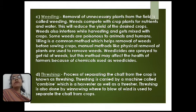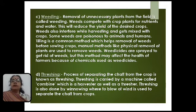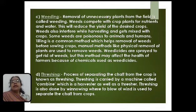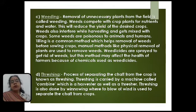Weedicides are sprayed to get rid of weeds, but this method may affect the health of the farmer because chemicals are used as weedicides. Next is threshing. The process of separating the chaff from the crop is known as threshing. Threshing is carried out by a machine known as a combine, which is a harvester as well as a thresher. Threshing is also done by winnowing, where wind is used to separate the chaff from the crops.